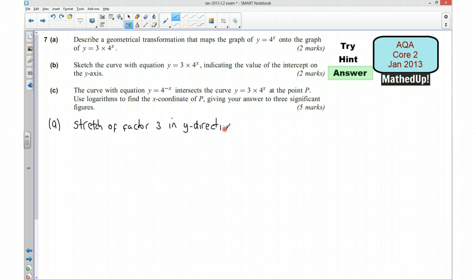OK, another way to think about this would be, well, if I rearrange this slightly, so I'm going to divide both sides by 3. So I've got a third of y is equal to 4 to the x. So to get from this equation to this equation, I've had to replace this y with a third of y.